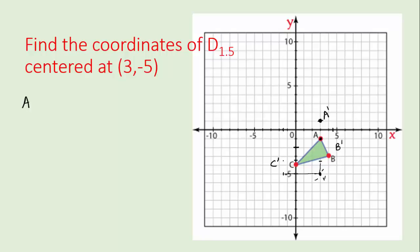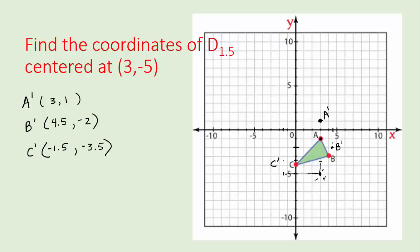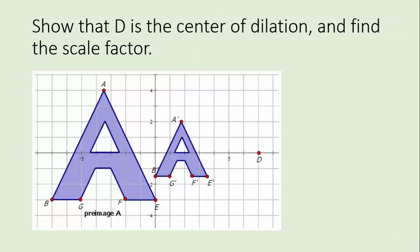Let's write down our coordinates. A prime is at three, one. B prime is at four and a half, negative two. And C prime is at negative one point five, negative three point five. Those are the coordinates of our new points. For our final figure, we have something a little more complicated — letters, like you might dilate for a poster. We need to find the scale factor and also prove that this is the center of dilation.